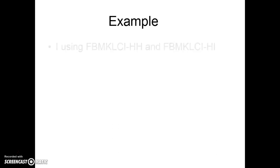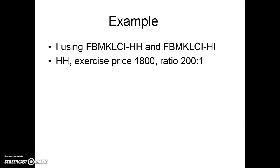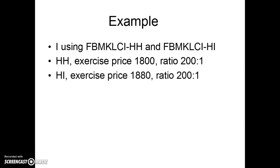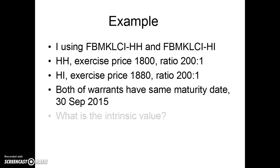For the example, I'm using FBM KLCI warrants HH and HI. For HH, the exercise price is 1800 and the ratio is 200 to 1. For HI, the exercise price is 1880 and the ratio is 200 to 1. Both warrants have the same maturity date, which is 30th September — very close.